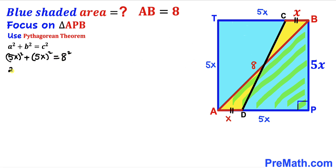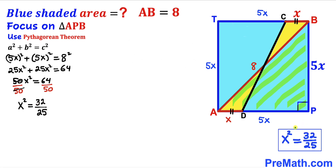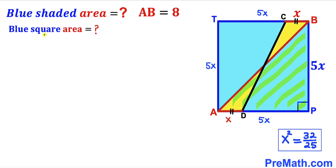Simplifying: 25X² + 25X² = 64. Combining like terms gives 50X² = 64. Dividing both sides by 50 and reducing, we get X² = 32/25.